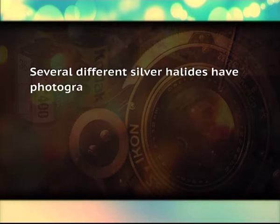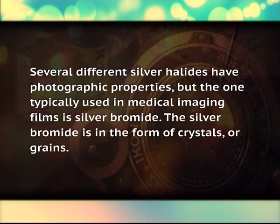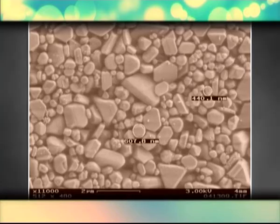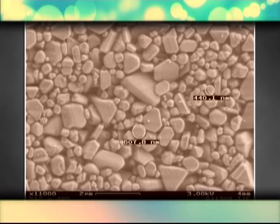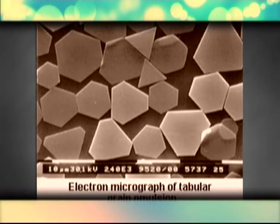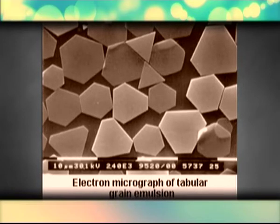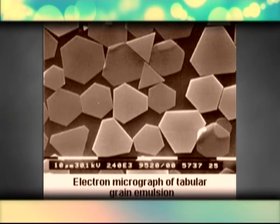The silver halide typically used in medical imaging films is silver bromide, in the form of crystals or grains. Silver halide grains are irregularly shaped like pebbles or grains of sand. Two grain shapes are generally used in film emulsions: one approximates a cubic configuration with its three dimensions approximately equal, and another is tabular-shaped. The tabular grain is relatively thin in one direction, with length and width much larger than its thickness, giving it a relatively large surface area. The primary advantage of tabular grain film over cubic grain film is that sensitizing dyes can be used more effectively to increase sensitivity and reduce crossover exposure.